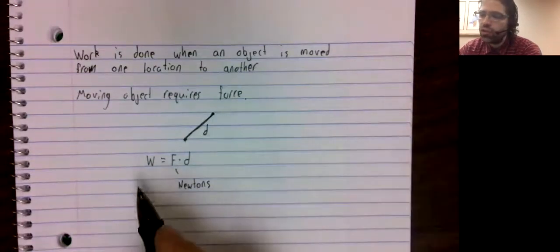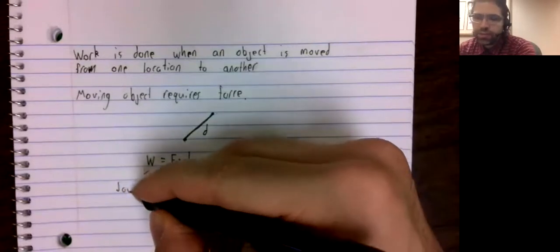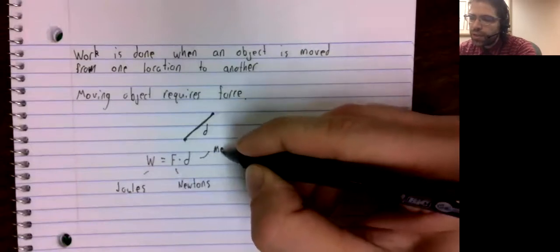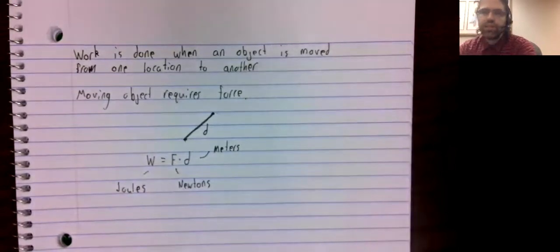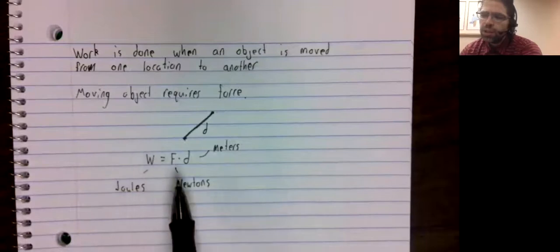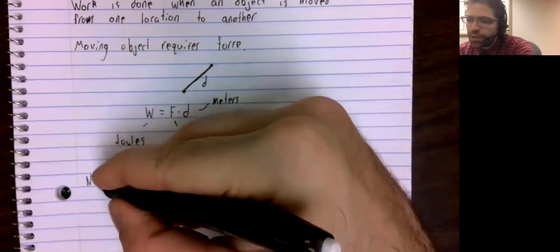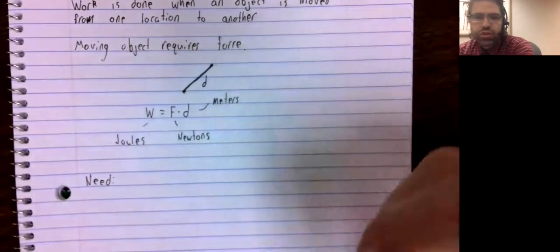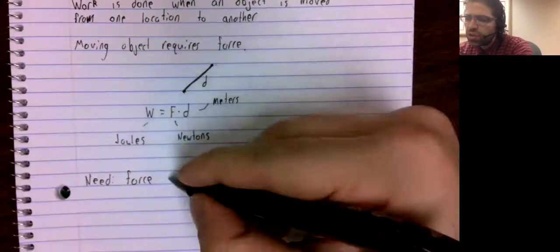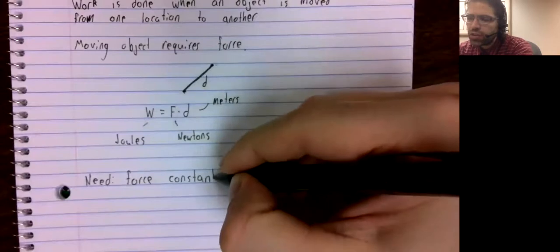The force is measured in Newtons and work is measured in joules and distance is measured in meters. Now, the issue with this formula is that you need the force to be constant.